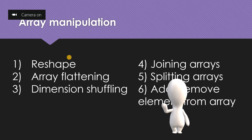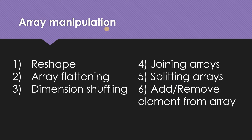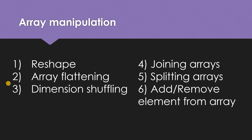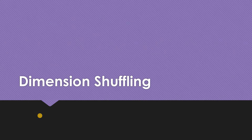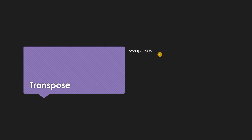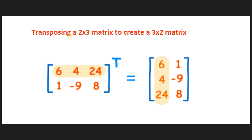Hello and welcome to this tutorial. In the previous tutorials we talked about array manipulation — reshape and array flattening, where we converted 2D and 3D arrays into 1D arrays. Now we are going to talk about dimension shuffling, which involves transpose and swap axis. We are going to see transpose first because it is a fairly easy topic.